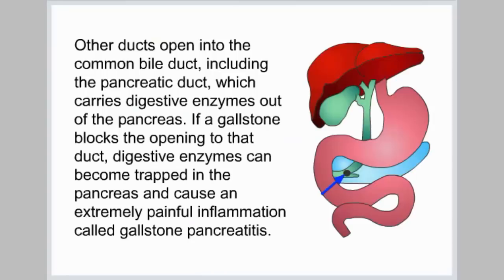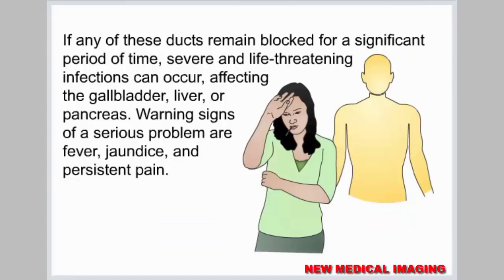Other ducts open into the common bile duct, including the pancreatic duct, which carries digestive enzymes out of the pancreas. If a gallstone blocks the opening to that duct, digestive enzymes can become trapped in the pancreas and cause an extremely painful inflammation called gallstone pancreatitis. If any of these ducts remain blocked for a significant period of time, severe and life-threatening infections can occur, affecting the gallbladder, liver, or pancreas. Warning signs of a serious problem are fever, jaundice, and persistent pain.